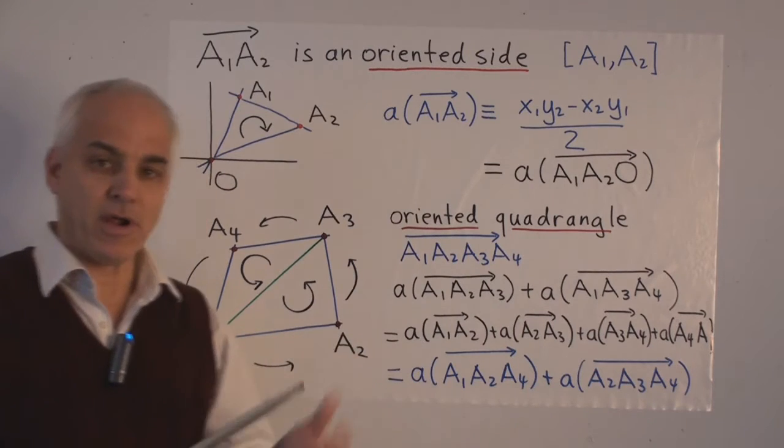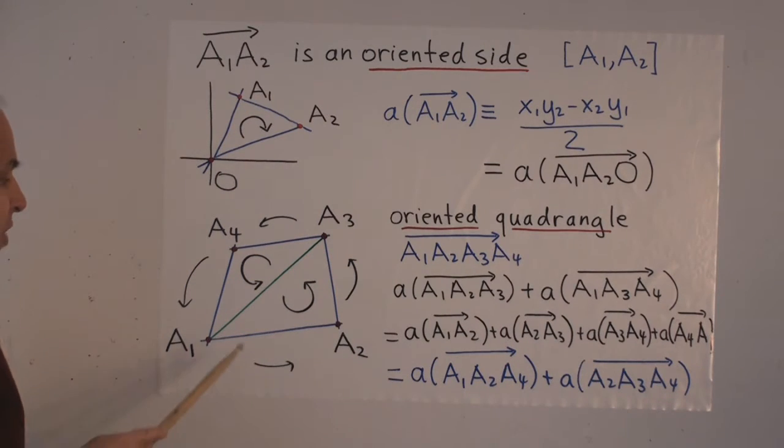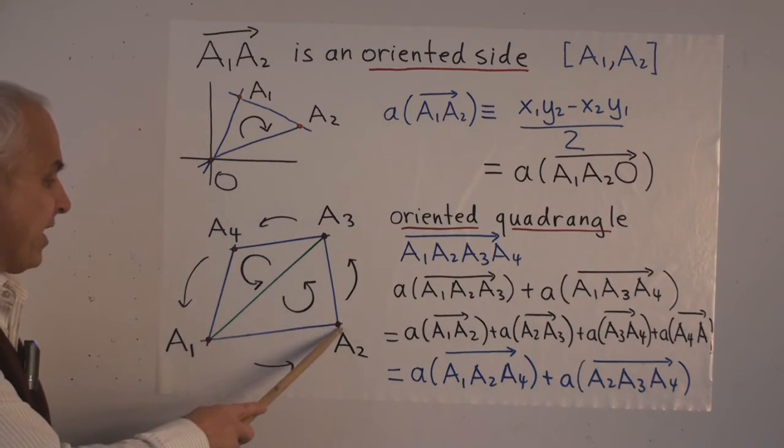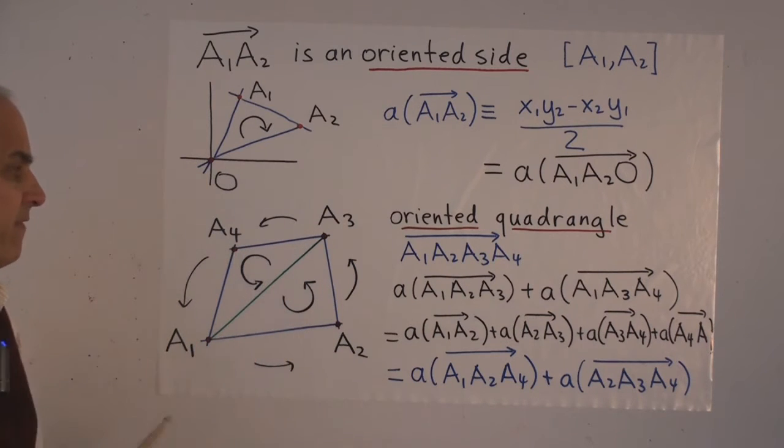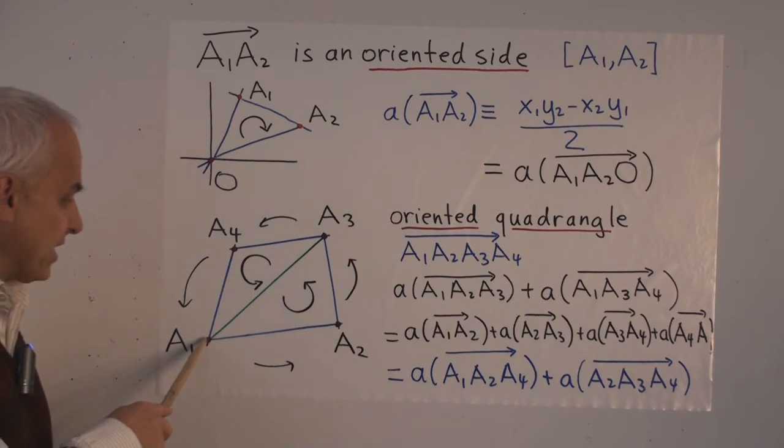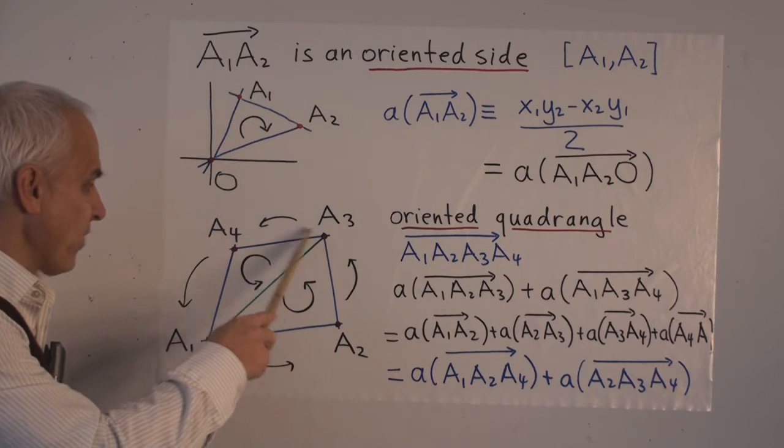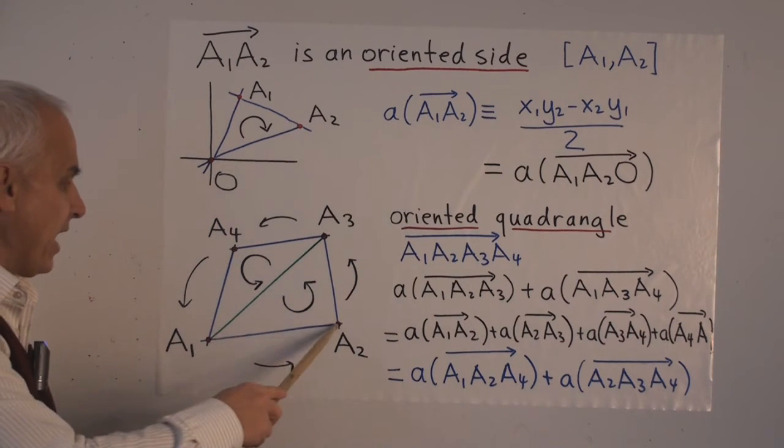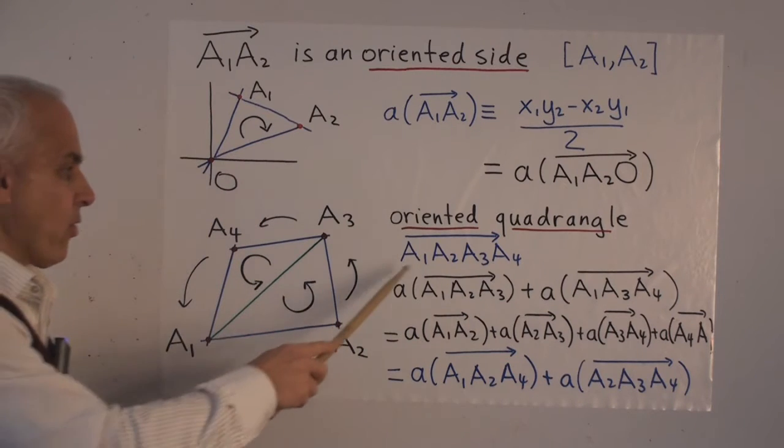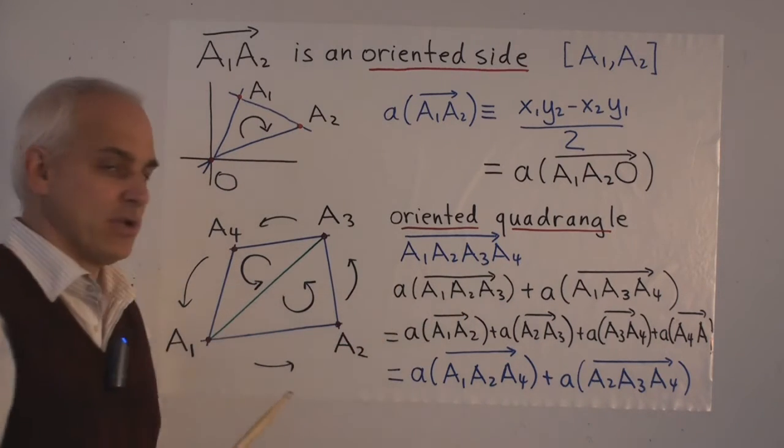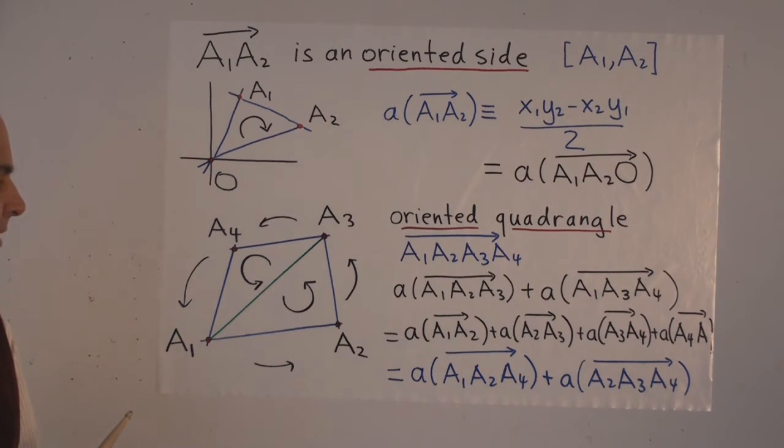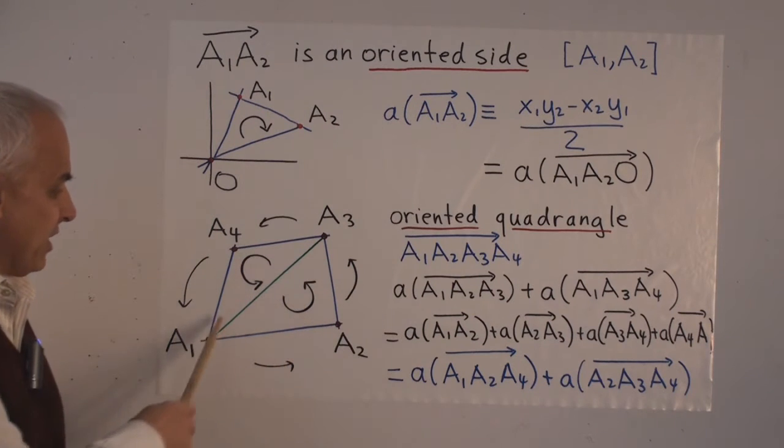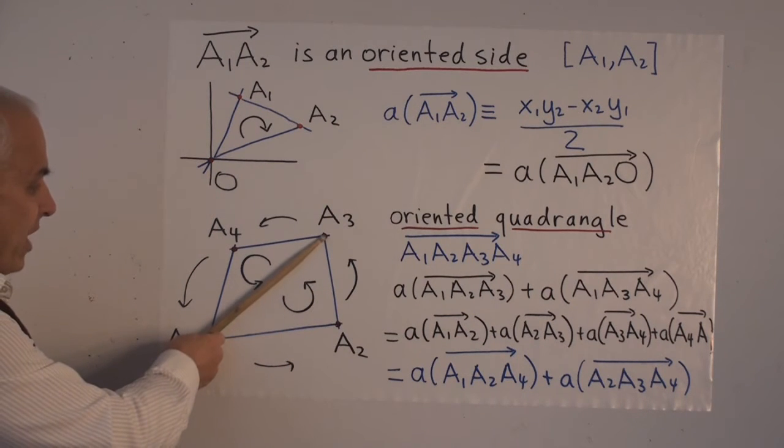So how are we going to use that for, say, a quadrangle? Quadrangle means four points. A1, A2, A3, A4. And we'll assume that this quadrangle is oriented in the same way that a triangle is. Namely, we have a specified order in which we traverse around the four points cyclically. So this one, A1, A2, A3, A4 in this direction, that's the oriented quadrangle, which we'll denote like that. Now this object can be divided into two triangles by, say, a diagonal line like that.